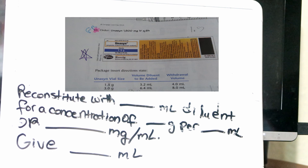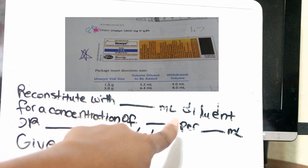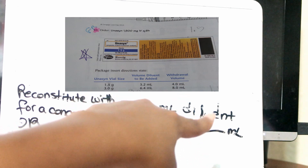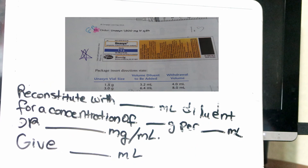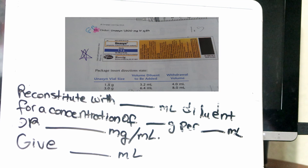The first question you're going to see is: the order says Unison 1,500 milligrams IV every six hours. Reconstitute with blank milliliters diluent for a concentration of blank grams per mL. Looking at your package insert, you have the 1.5 gram vial, so the volume to be added is 3.2 milliliters — that's what you're going to write. Since you have the 1.5 gram vial, you are going to add 3.2 milliliters diluent to the solution.